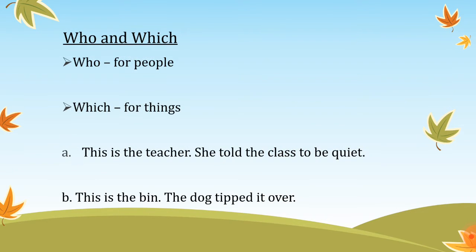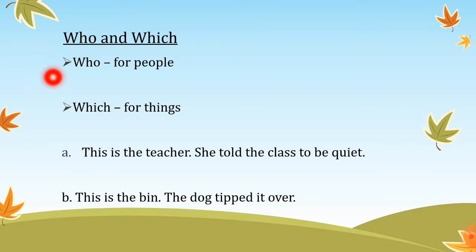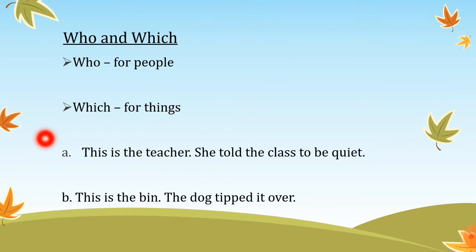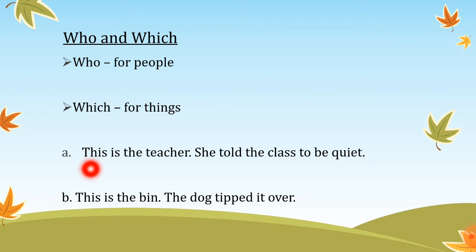Moving on to our next grammar topic, which is the usage of 'who' and 'which'. It is very simple. 'Who' is used for people and 'which' is used for things. We're going to look at two examples where we connect sentences using either 'who' or 'which'. The rest of the examples we'll do in class.